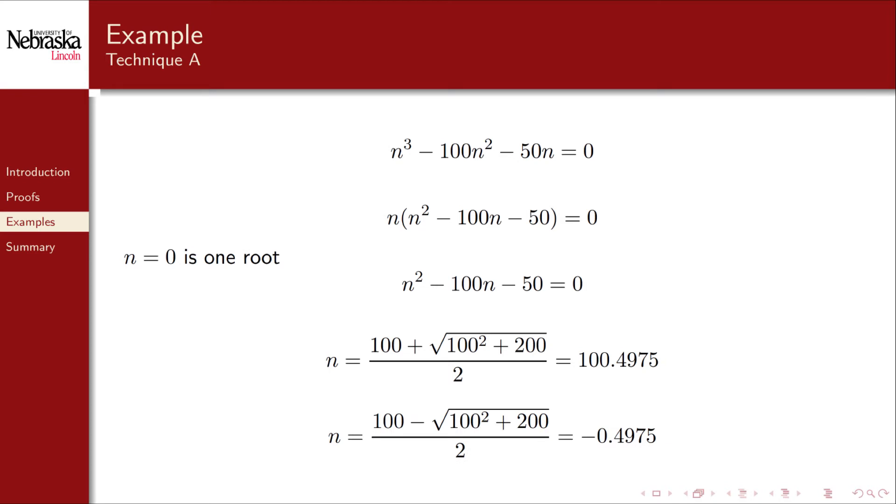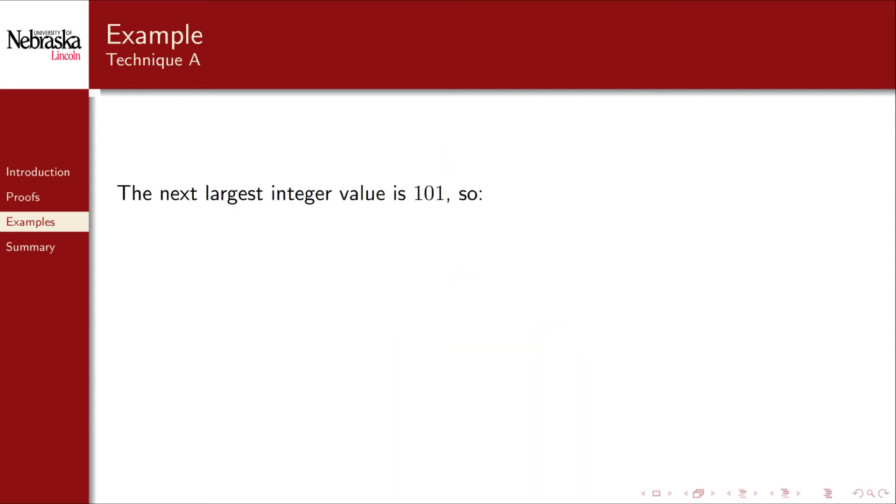The root that we're looking for is 100.4975. As per the definition, the next largest integer value is 101. So for c being 1, and for all n greater than or equal to 101, the inequality holds. And therefore we've proven that 100 n squared plus 50 n is big O of n cubed.